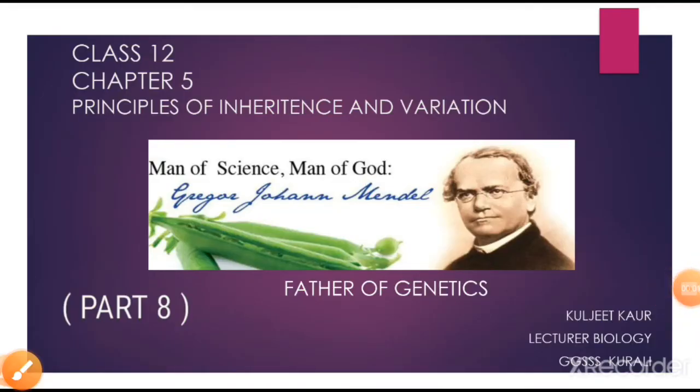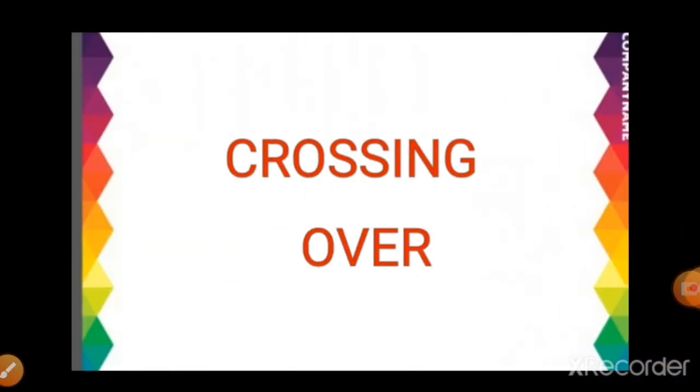Let's continue chapter 5, that is Principle of Inheritance and Variation. In my previous lecture, we studied about linkage, types of linkage, and significance of linkage. Today we are starting another topic which is just opposite to linkage, and that is crossing over.